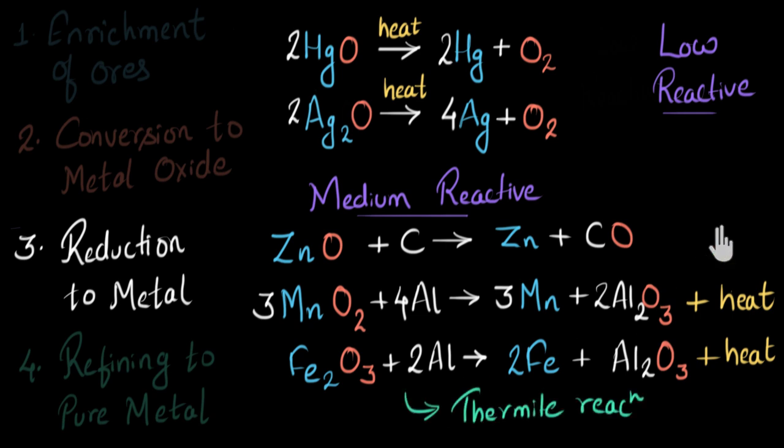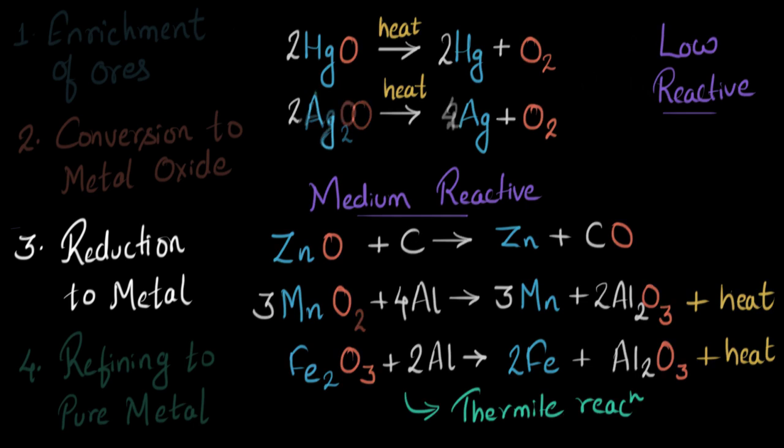So far we have seen how to reduce low reactive and medium reactive metals. Now let's look at how to reduce high reactive metals. For example, sodium, calcium, magnesium, and aluminium. These metals are very reactive. So their compounds are also going to be very stable, very strongly bonded. And it would not be easy to break them apart or reduce them by just heating or by using carbon or other metals.